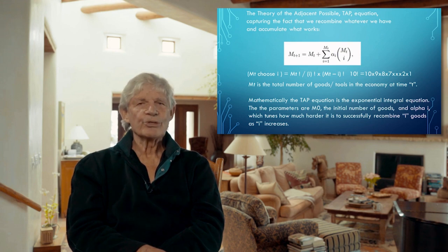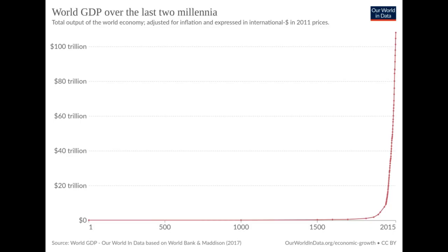It's remarkably simple. Economic growth, as represented by world GDP, shows a hockey stick pattern. First there is very slow growth for a very long period of time, then a sudden increase in the rate of growth, followed by an explosive growth phase.